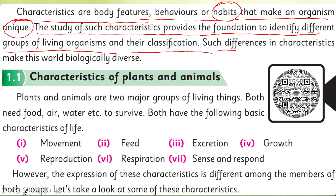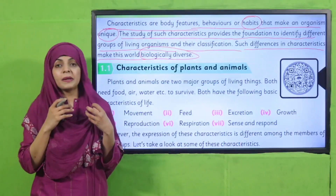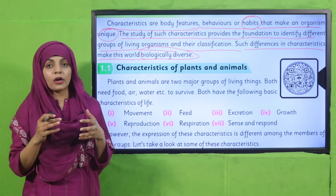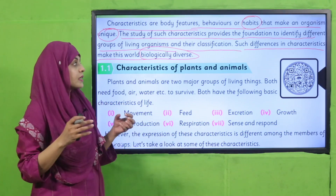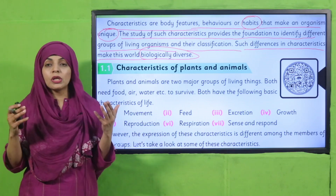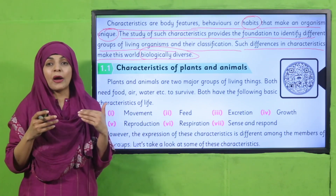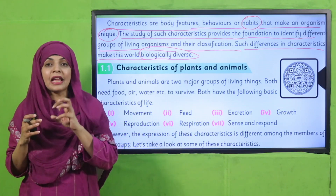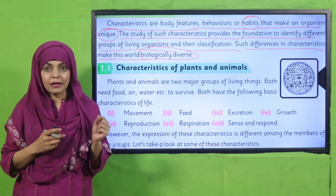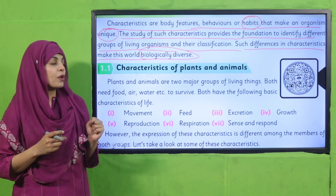Such differences in characteristics make this world biologically diverse. When we study these characteristics, we come to know how living organisms are different from each other. Because of these differences, all the living things in this world are diverse — that is biodiversity. Bio means life, so biodiversity means the differences in life forms that exist in this world.